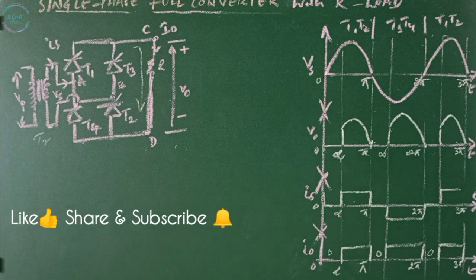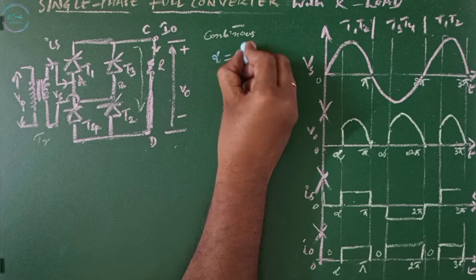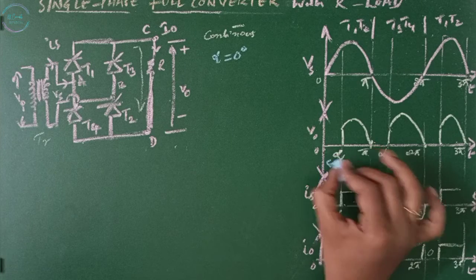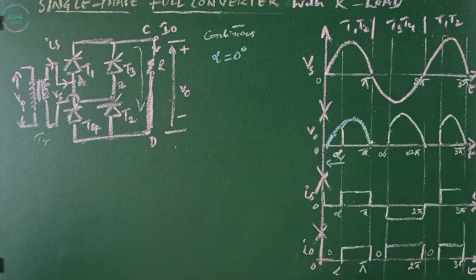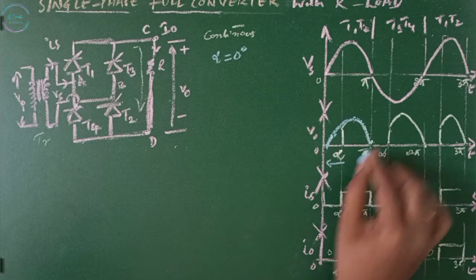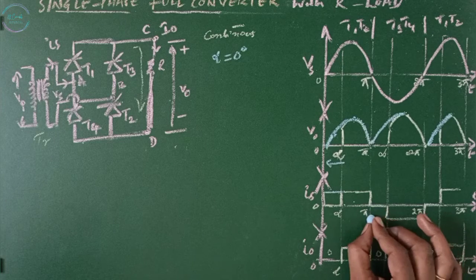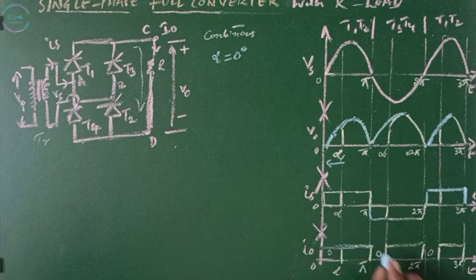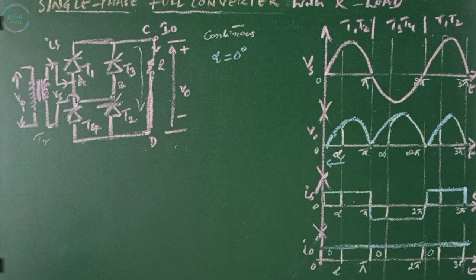Now let us see how to achieve continuous operation. As soon as the voltage shifts from positive to negative and negative to positive, we need to turn on the respective thyristors immediately — that means making alpha equal to zero degrees. When alpha equals zero, the firing angle shifts to zero and the input voltage present at the input terminals appears directly across the output. In the negative half cycle, T3 and T4 are turned on immediately as the input shifts, so the output voltage follows the input continuously. The output current is also available at all times, making the output current continuous.